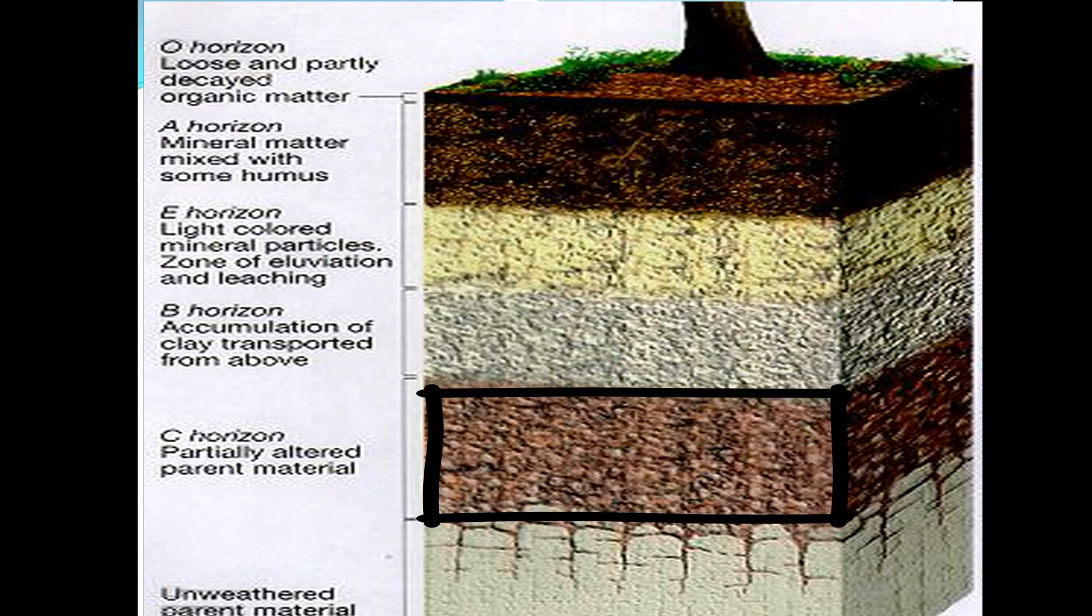Horizon C. Horizon C is the fifth layer of the soil and it is also known as regolith. Plant roots do not go through this layer and it has very little organic matter. It may or may not be the same as the material from which it was formed. The colour of the C horizon is grey and is made up of fragmented pieces of bedrock.